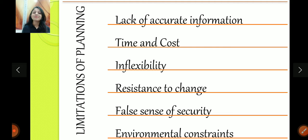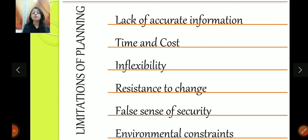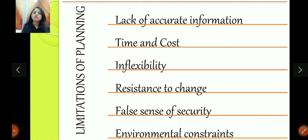And planning, like every other thing in the world, has environmental constraints. Anything in the environment can spoil your planning. For example, nobody anticipated that we would face a pandemic for two years. So that's an environmental constraint, and even large organizations' big plans failed. That's one of the limitations of planning.